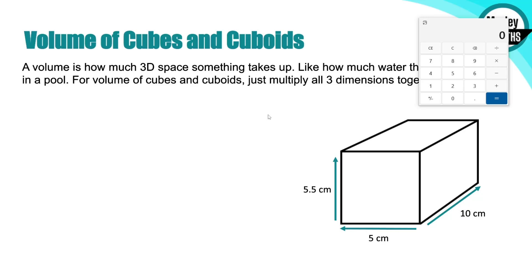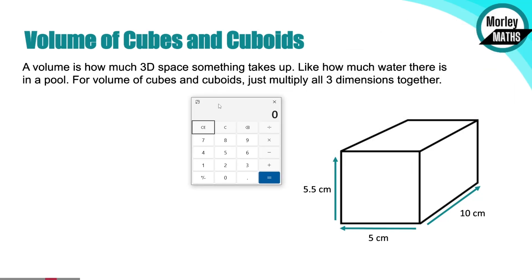So first of all, what is volume? If you think of area, it's how much space something takes up on the floor, like a rug. Volume is how much space there is in a three-dimensional object. So it could be how much water there is in a swimming pool, or what's the volume of a Pringles tube - how much space is inside a 3D shape.